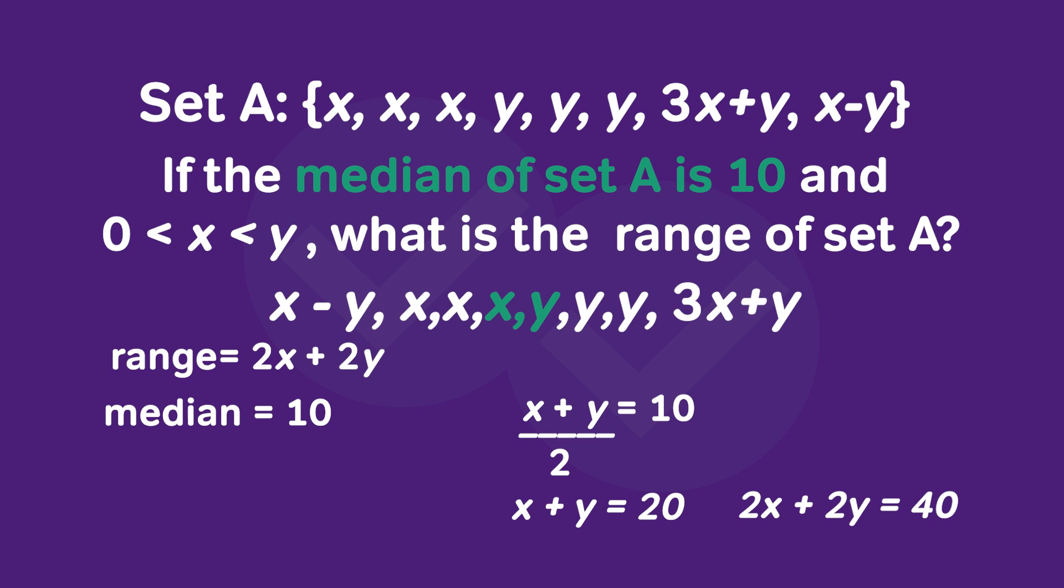From here, notice that if we take this equation and multiply both sides by 2, we get x plus y equals 20. And if we multiply both sides by 2 again, we get 2x plus 2y is equal to 40.